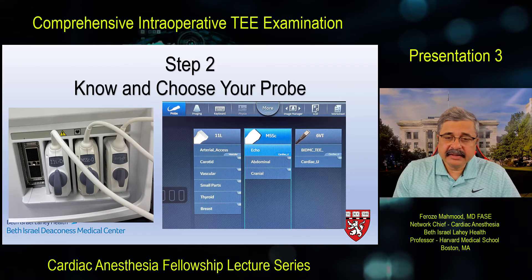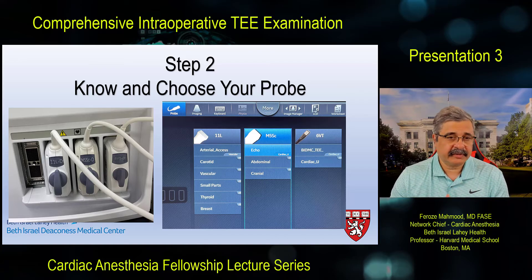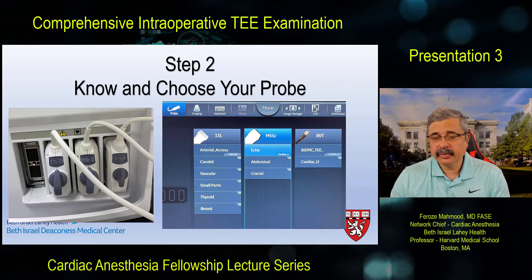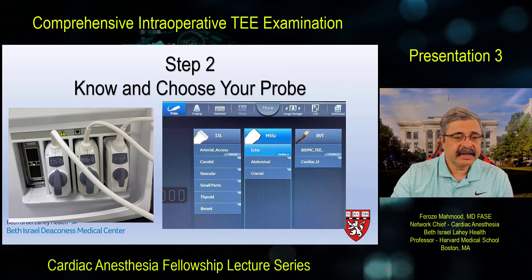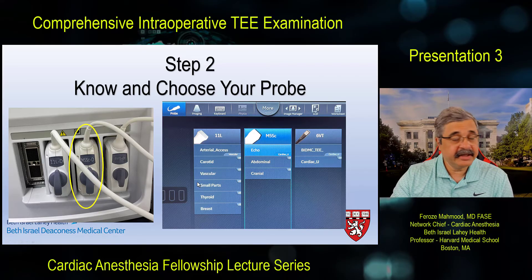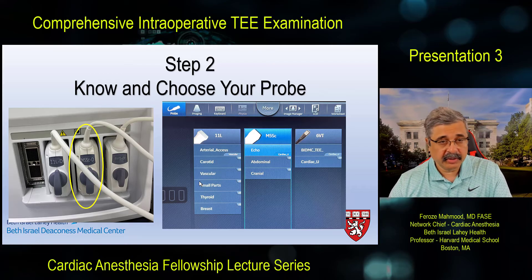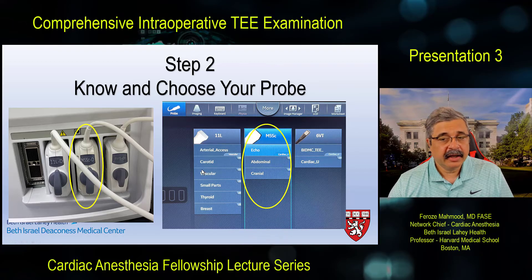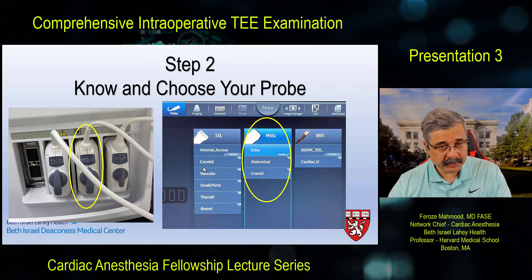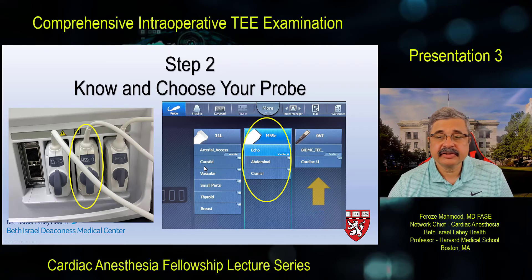While the system has multiple probes, it also gives you the option to select a specific probe. It happens more than once that while doing a TEE examination, a different probe — such as the transthoracic M5SC probe — has been selected. Regardless of how much you try, unless you select the TEE probe on the correct end, you will not be able to see a TEE image. Selecting the correct probe and inserting it into the right slot is extremely important.